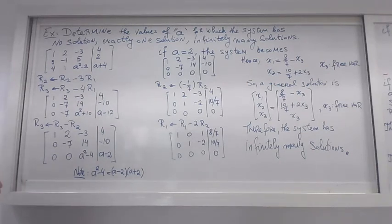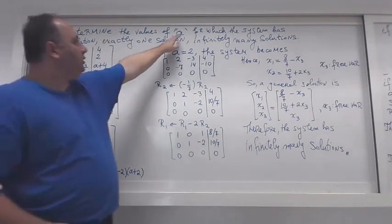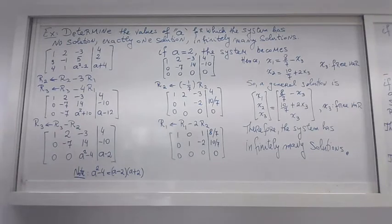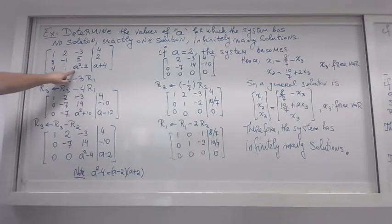One of the exercise questions was: determine the value of parameter A for which the system has no solution, exactly one solution, and infinitely many solutions. The system is given here in augmented matrix form, and parameter A appears in the last row.